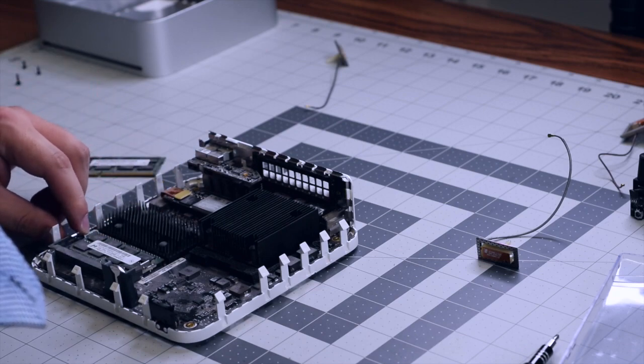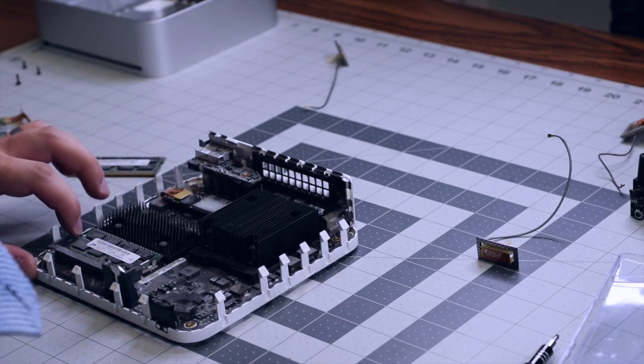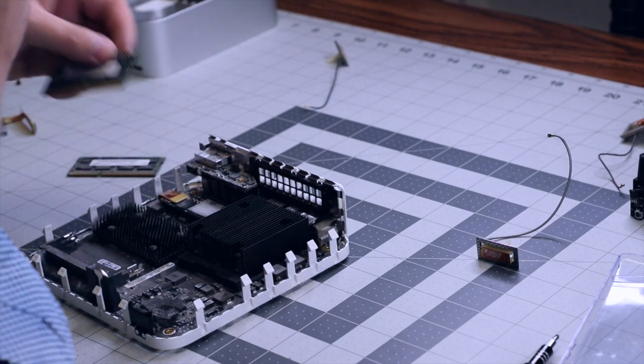Same exact thing for the bottom chip. Unclip it from the left, then unclip it from the right. You can obviously see if I can do this with one hand and a camera, you should be able to do this with two hands without any problems.